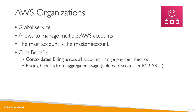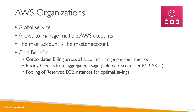You also get pricing benefits from aggregated usage. When you use a lot of EC2 or S3, you get a discount because you've used them a lot. If you have multiple accounts, you could lose that volume discount, but with an organization, because billing is consolidated, the aggregated usage is also consolidated, meaning you get more discounts. Additionally, reserved instances are shared across all accounts, so if one account doesn't use a reserved instance, another one can — maximizing cost savings.